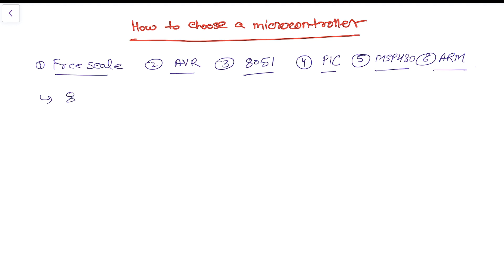In terms of data bits, we have 8-bit, 16-bit, 32-bit, and 64-bit microcontrollers. As you can see, there is a huge amount of variation in the available microcontrollers, and it's really very difficult to choose which one is going to fit into your design.